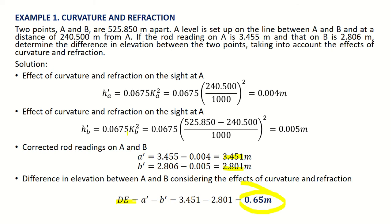In ordinary precision leveling, however, it is not necessary to consider curvature and refraction because the errors are very small — on the order of 0.004 m — and can be neglected unless high-precision leveling is being performed. That concludes our introduction to leveling.